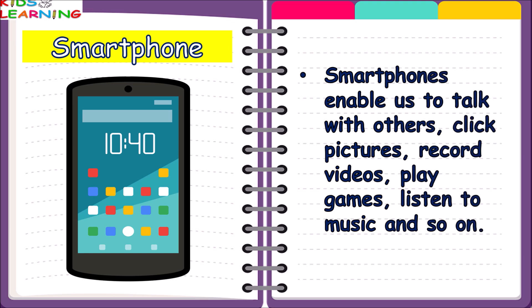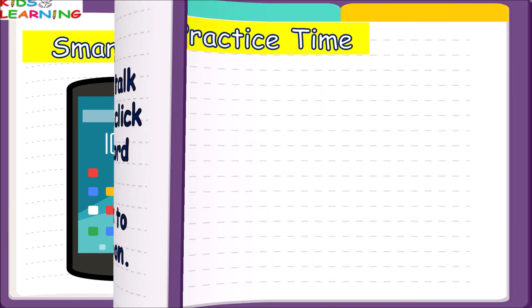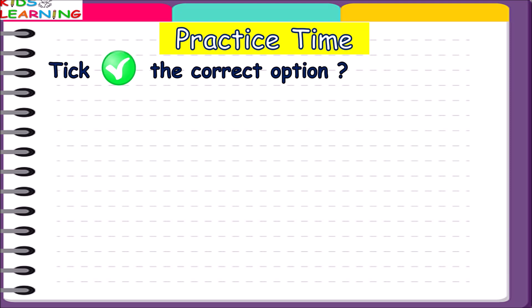Smartphone — this is a smartphone. It is a mobile phone with the features of a computer. Smartphones enable us to talk with others, click pictures, record videos, play games, listen to music, and so on.